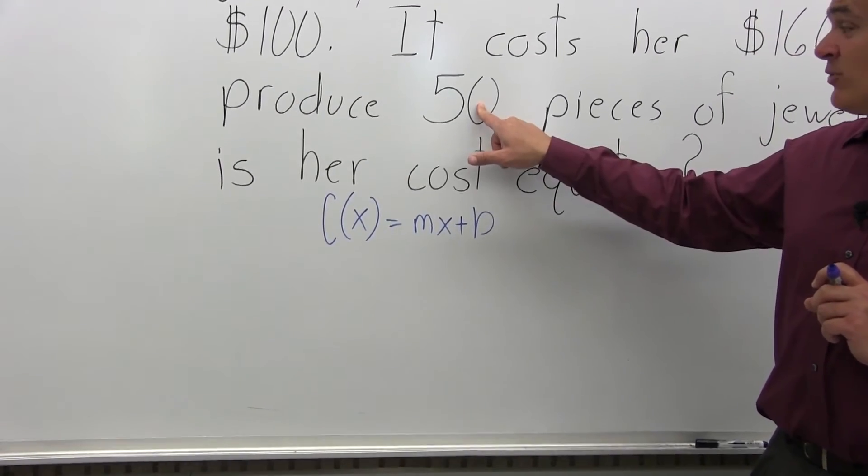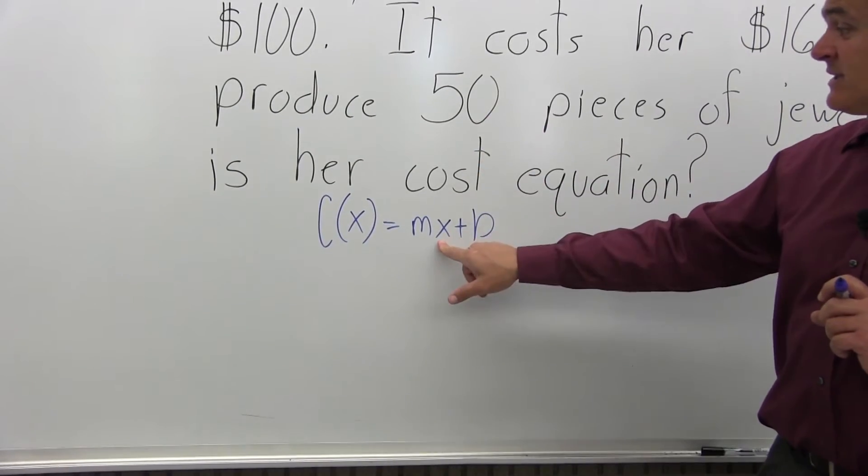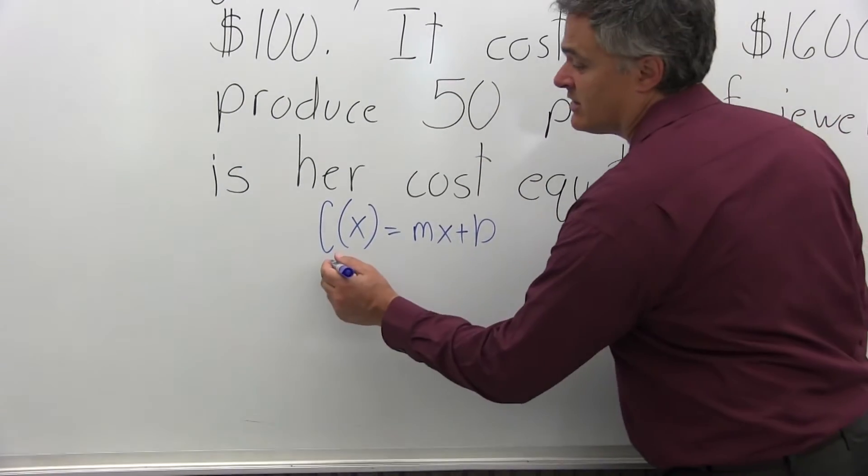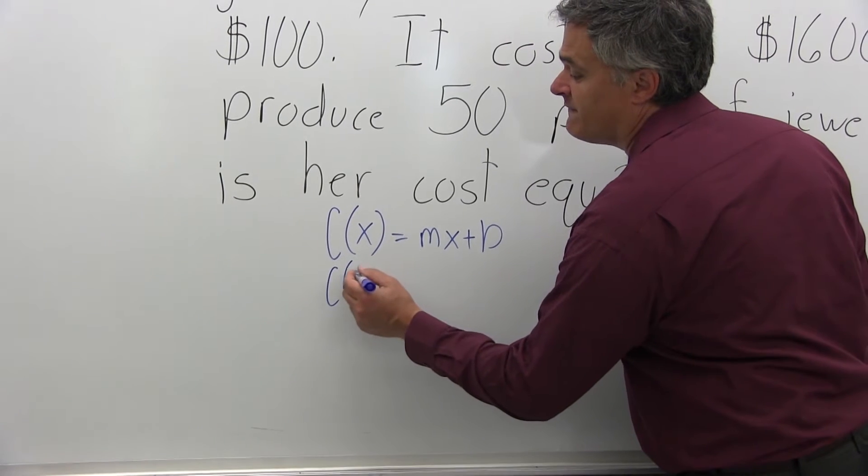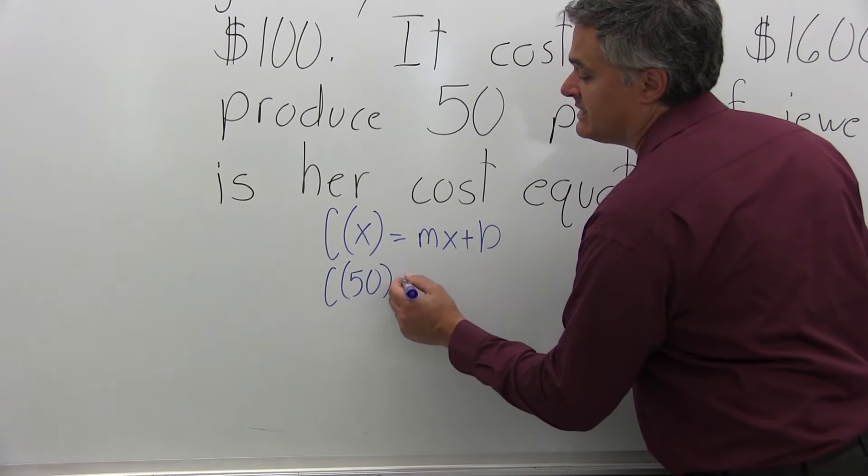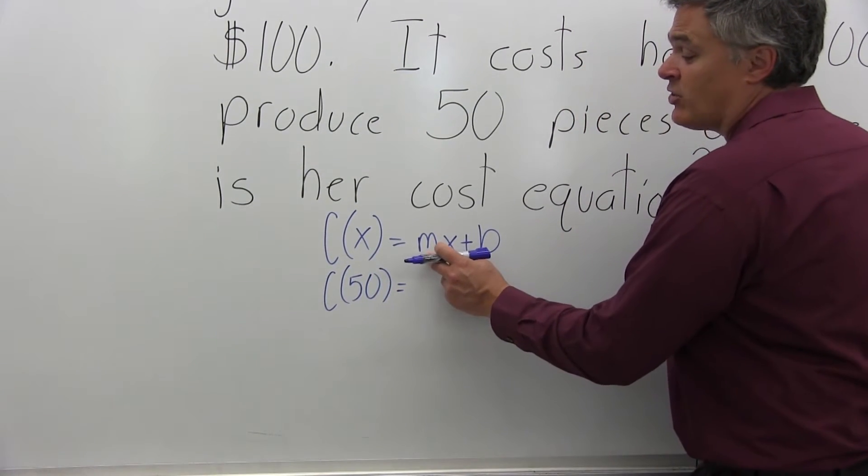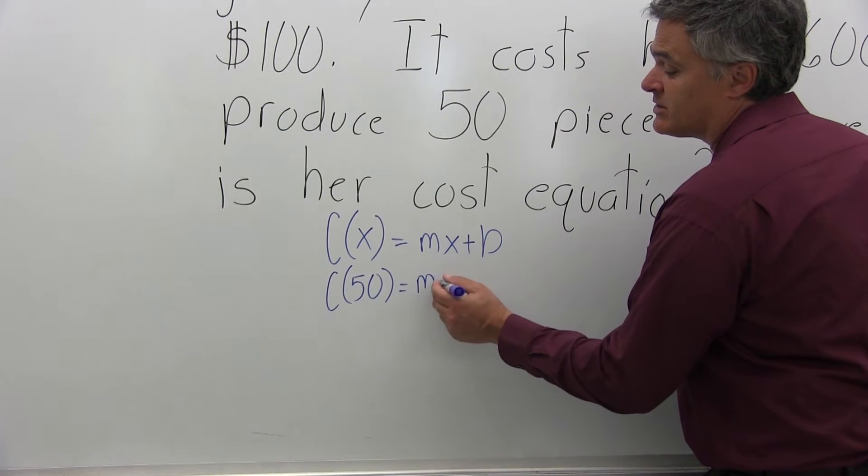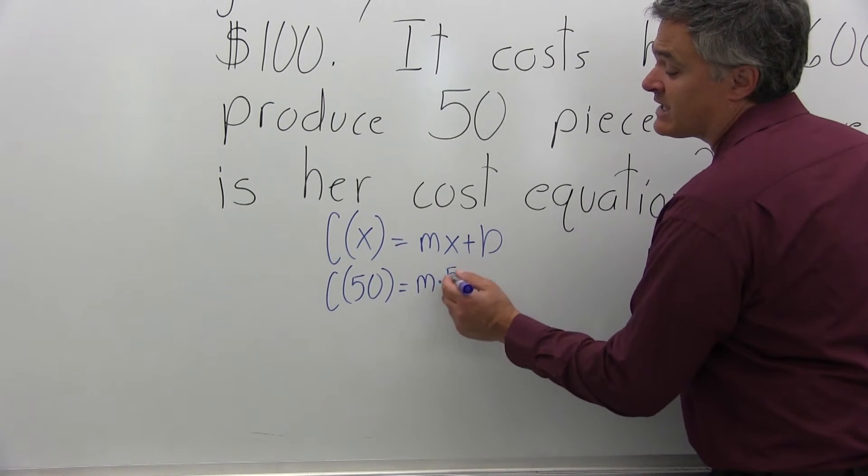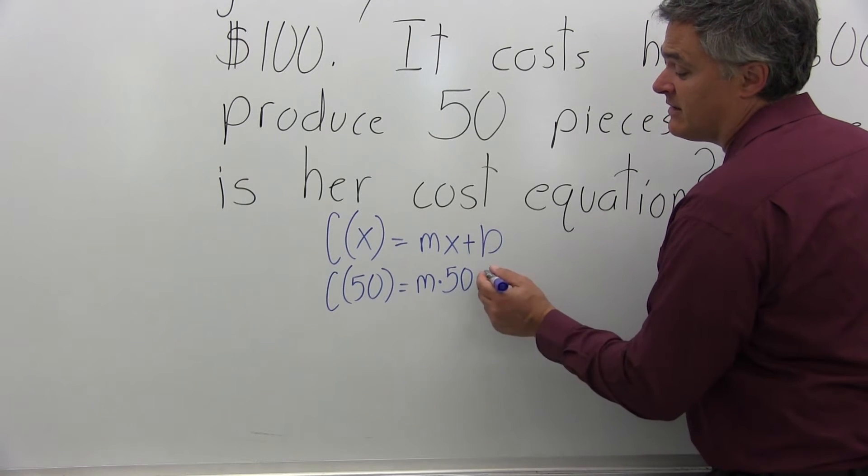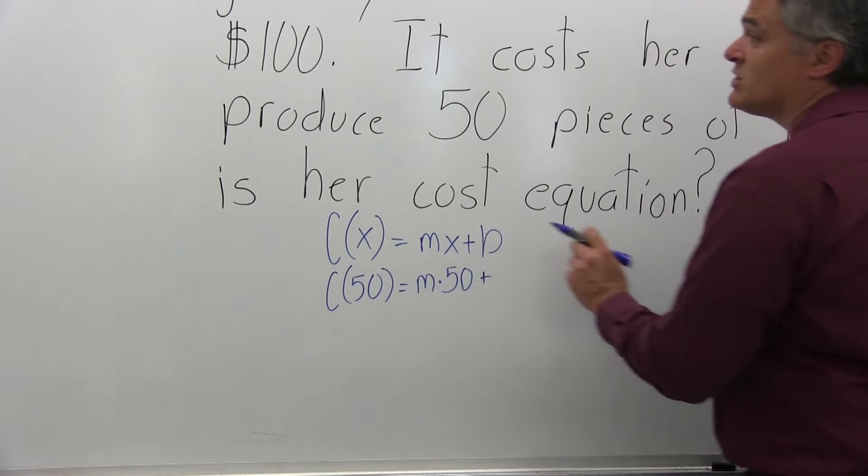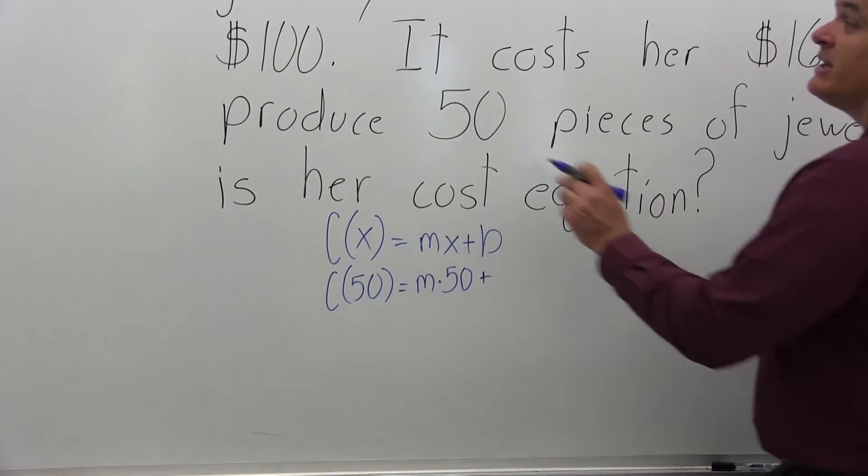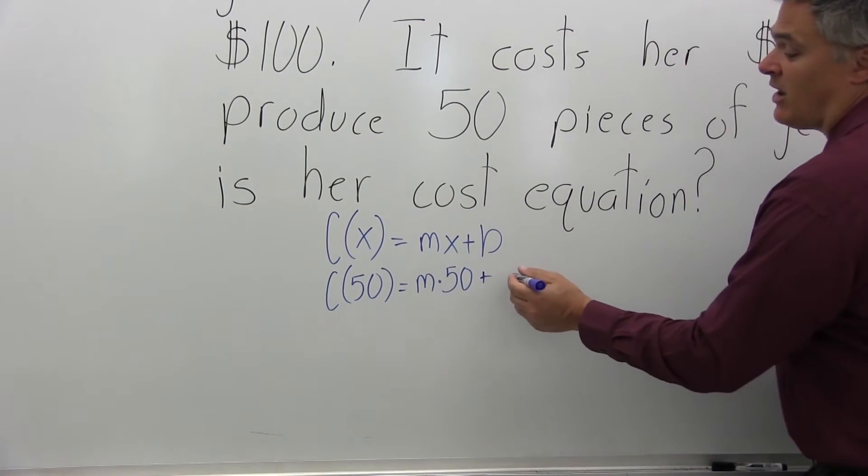The fact that we're producing 50 items gives us our value for X. So the cost of 50 items is equal to M times 50, and B, the fixed cost, is given in the problem as $100.